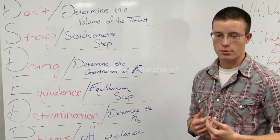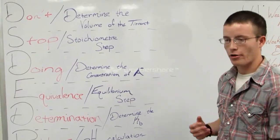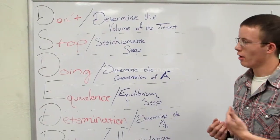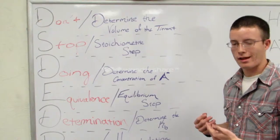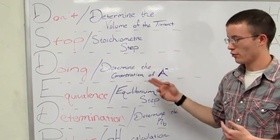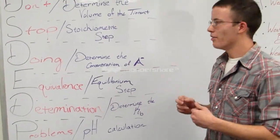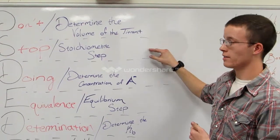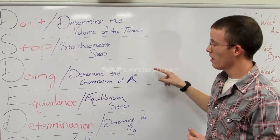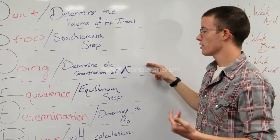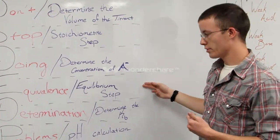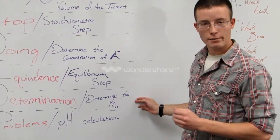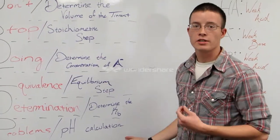For those of you who have made it this far in chemistry, I'm sure you've already encountered equivalence point determination problems. To help you out, I've created a helpful mnemonic: Don't Stop Doing Equivalence Determination Problems. This stands for: first step, determine the volume of the titrant; second step, do the stoichiometric step; third step, determine the concentration of A-minus; fourth step, do the equilibrium step; fifth step, determine the KB; and sixth step, pH calculation.